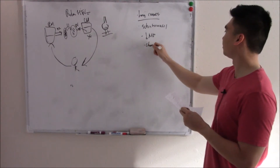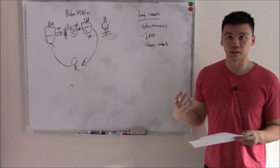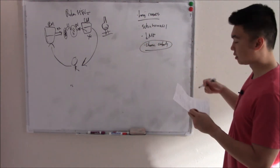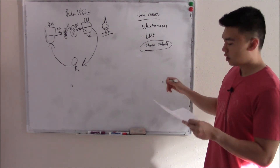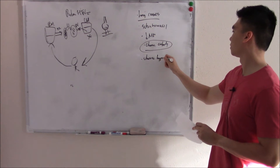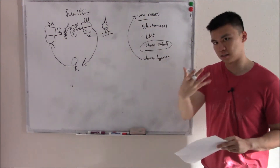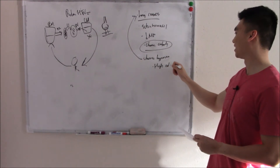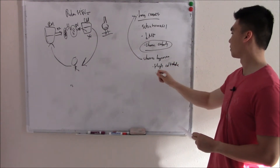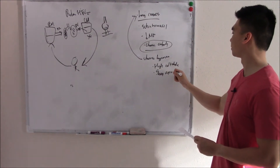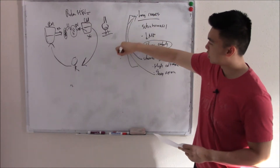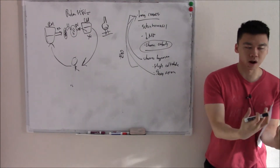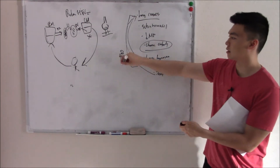You can have chronic recurrent emboli — recurrent emboli that damage your lung a ton, causing fibrosis, arteriosclerosis, and hypertension. So chronic recurrent emboli is a big one. You can also have chronic hypoxia. A lot of lung diseases like COPD cause chronic hypoxia, but you can also have non-lung causes — living at high altitude, sleep apnea. Anytime you have chronic hypoxia, your body releases EPO, a hormone that increases red blood cells to carry what little oxygen you have to your tissue.